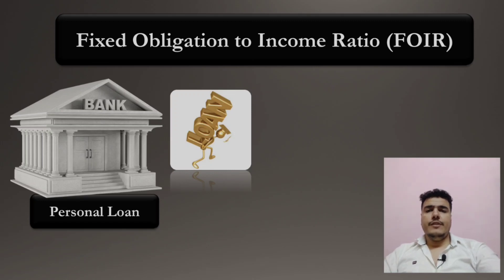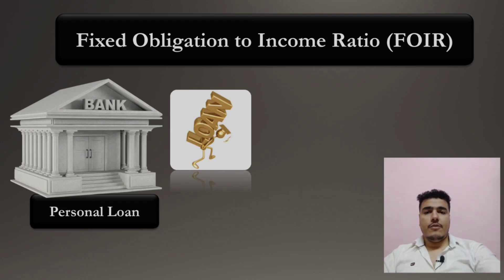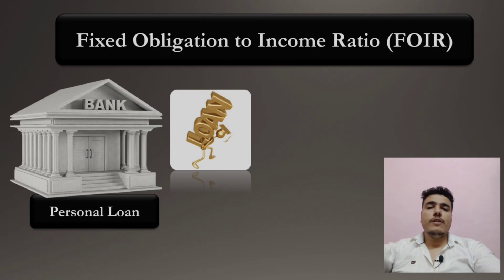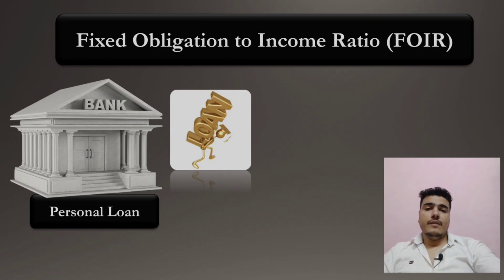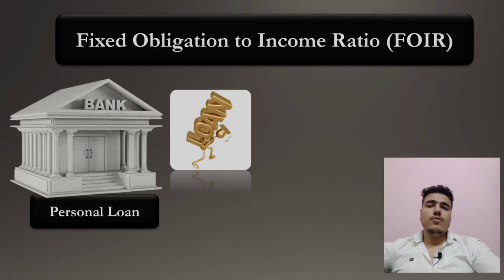Hello friends, welcome to my channel. In this video you will learn about Fixed Obligation to Income Ratio. Whenever you apply for a personal loan or any other loan facility from a bank, the bank will check certain eligibility criteria or parameters to identify whether you are able to repay that amount in future or not. If those parameters are not validated, there are chances that the bank might incur losses due to non-repayment.